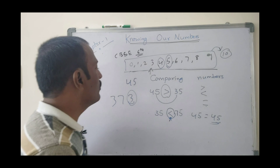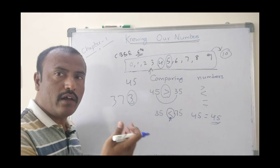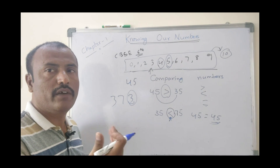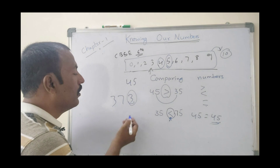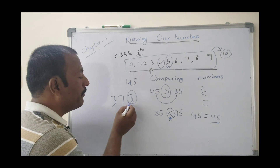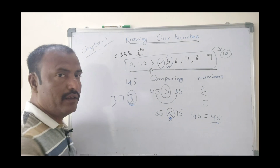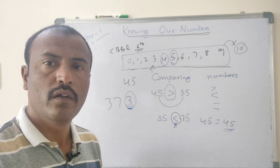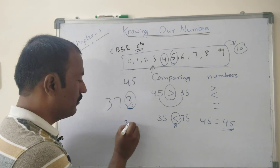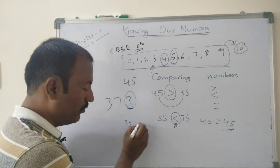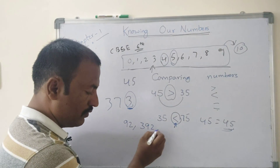Whenever we are comparing large numbers, we can compare with the place values. For example, consider the numbers: 92, 392, and others in a series.